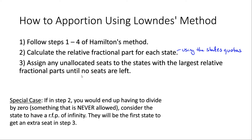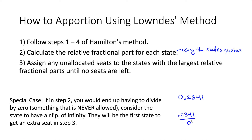There is one special case we need to talk about. If in step two you would end up having to divide by zero — something that is never allowed — consider the state to have a relative fractional part of infinity. They will be the first state to get an extra seat in step three. So if you have a quota like 0.2341 and try to find the relative fractional part, you would have to divide by zero, so you just consider that relative fractional part to be equal to infinity. That's the rule we have when using Lowndes' method.